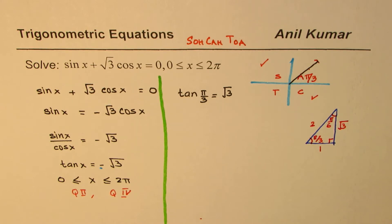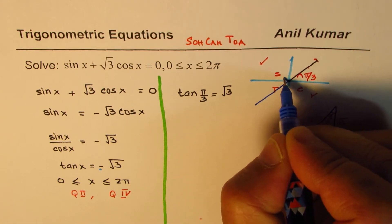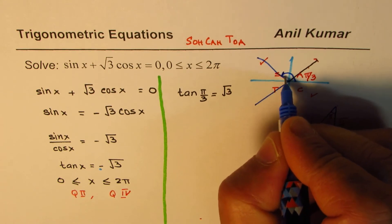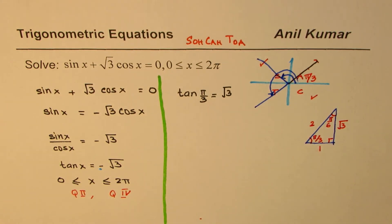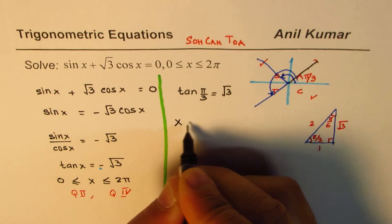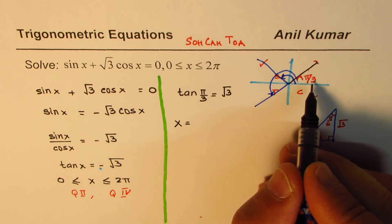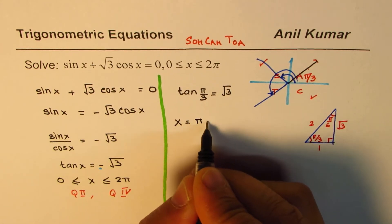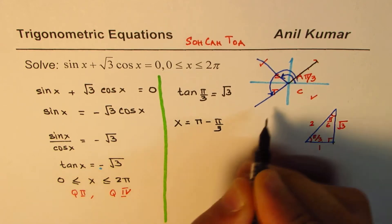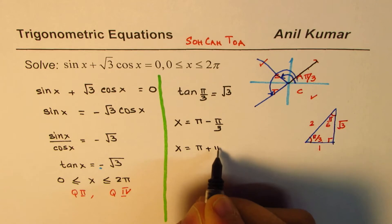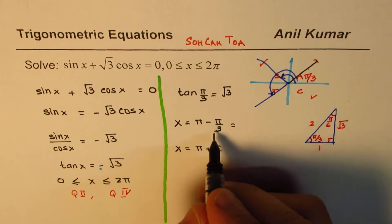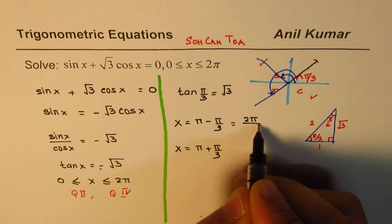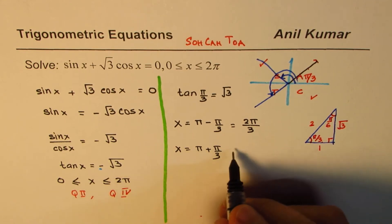The solutions we are looking for lie in quadrant 2 and quadrant 4. There are two solutions within 0 to 2 pi. So we can write x equals pi minus pi by 3 for the quadrant 2 solution, and x equals pi plus pi by 3 for the other. That gives 2 pi by 3 and 4 pi by 3.